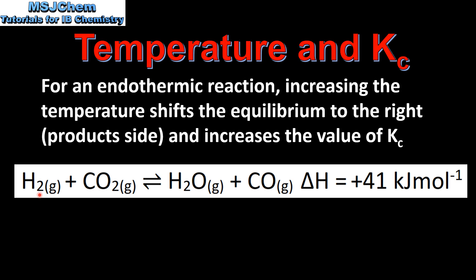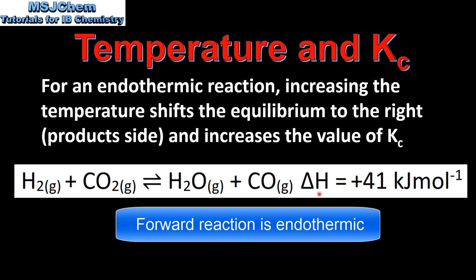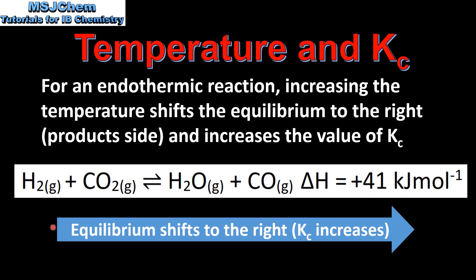Here we have the reaction of hydrogen with carbon dioxide to form water and carbon monoxide. The enthalpy change for this reaction is positive 41 kilojoules per mole, which means it's an endothermic reaction. So by increasing the temperature, the equilibrium will shift to the right — the product side — and the value of Kc will increase.